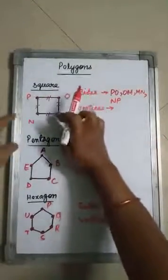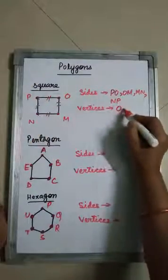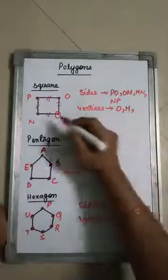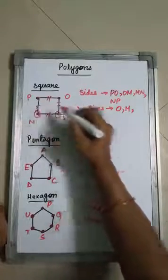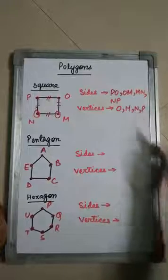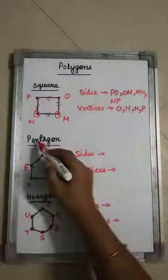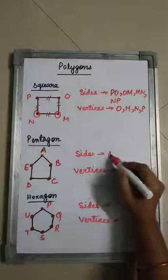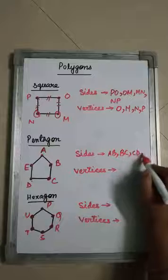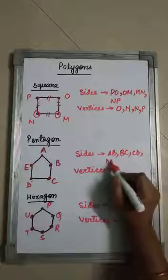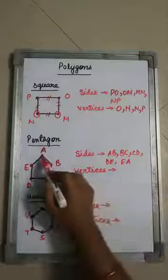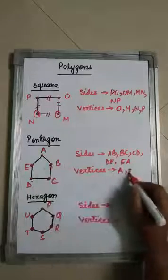What are the vertices of the square? Sides PO and NP meet at P, sides PO and OM meet at O — so O is one vertex. Sides OM and MN meet at M — M is another vertex. Sides MN and NP meet at N — N is another vertex. So the vertices are P, O, M, and N. For the pentagon, the sides are AB, BC, CD, DE, and EA, and the vertices are A, B, C, D, and E.